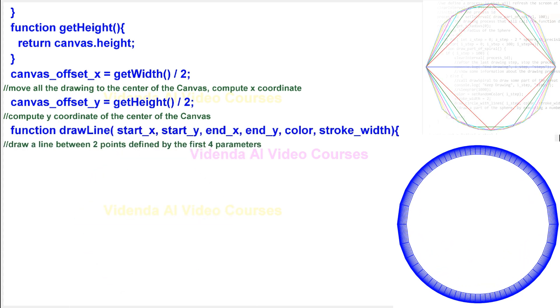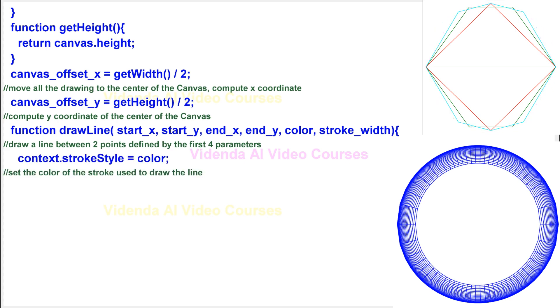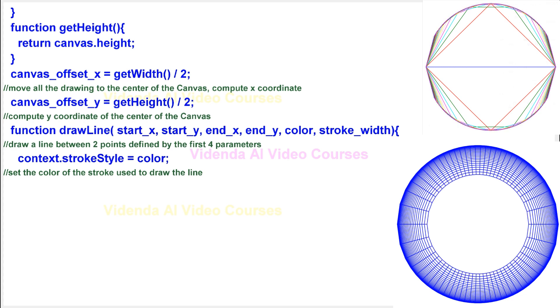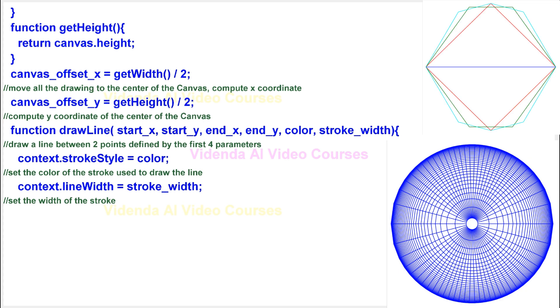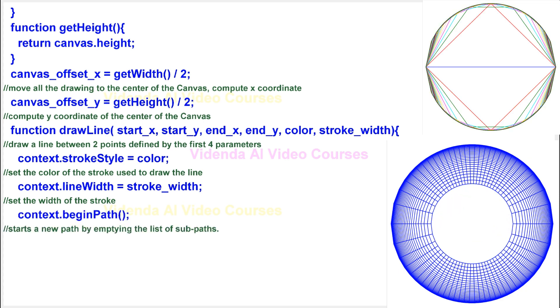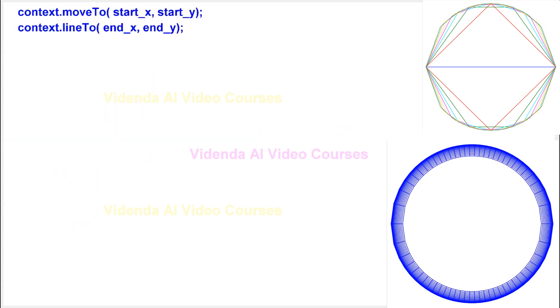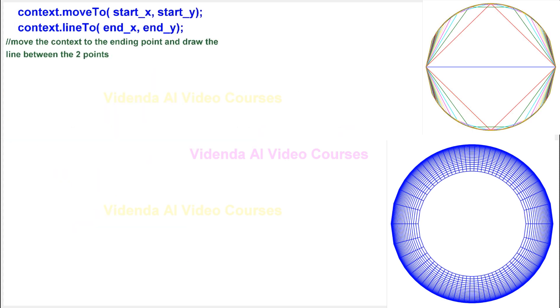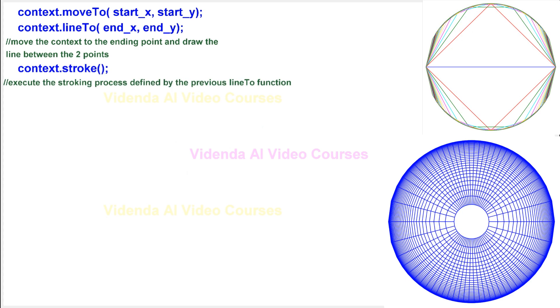Draw a line between two points defined by the first four parameters. Set the color of the stroke used to draw the line. Set the width of the stroke. Starts a new path by emptying the list of sub-paths. Move the context to the starting point without drawing anything. Move the context to the ending point and draw the line between the two points. Execute the stroking process defined by the previous line-to function.